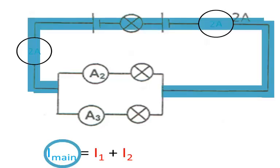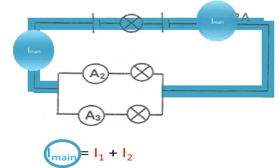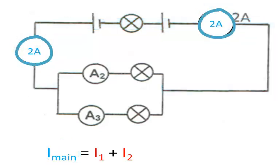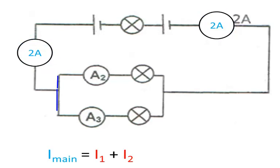And the current strength in the main part of the circuit, whether it be here or here, is the same as one another. In this case, we are told that 2 amps. And then that 2 amps splits.